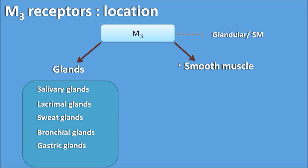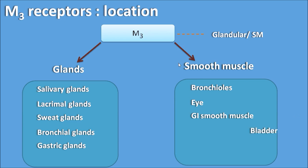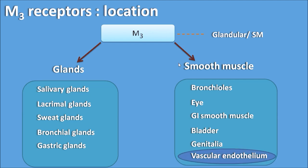M3 receptors are also expressed on various smooth muscles including bronchioles, eye, GI smooth muscle, bladder, genitalia, and vascular endothelium. Importantly, M3 receptors are present on the vascular endothelium but not on the vascular smooth muscle itself. This difference in location produces a difference in action which will be discussed in the next session.